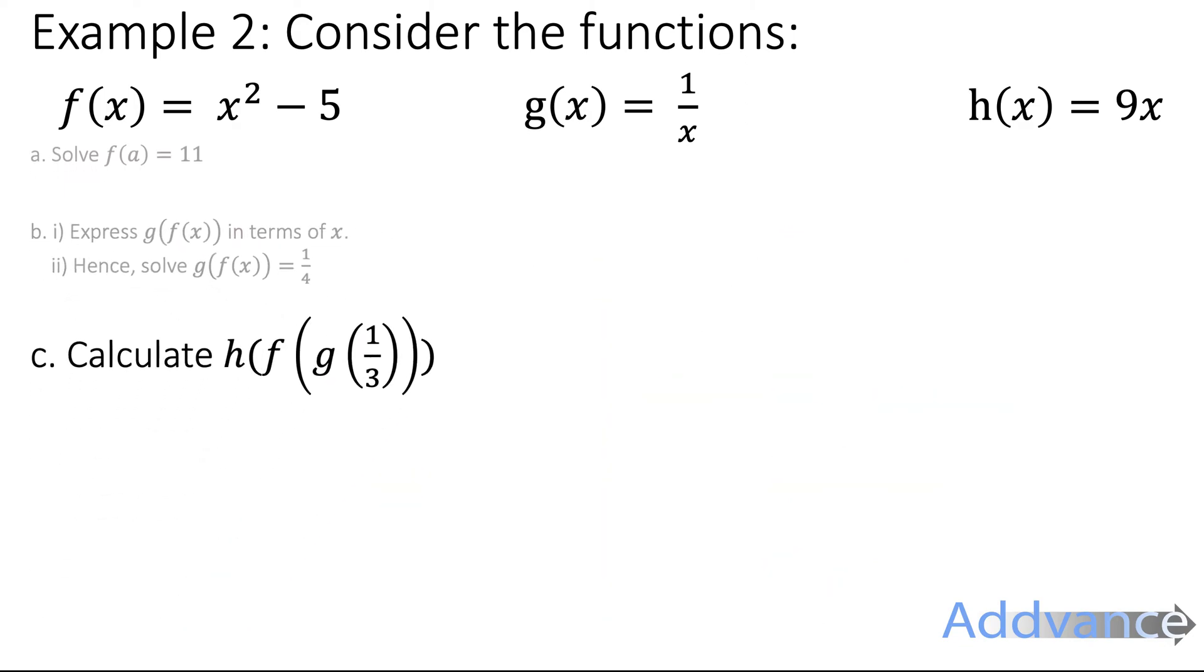Now finally, we're going to calculate h of f of g of a third. And we could solve this algebraically, but easier is just to put a third into g, get an answer, and put that answer into f, get an answer, put that answer into h, and get an answer. And that's what we're going to do. So we're going to put in an order g of x, then f of x, then h of x, because g is inside of f, which is inside of h. And we're going to put a third into g.